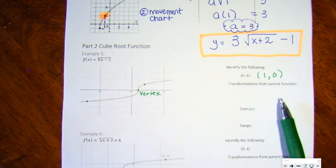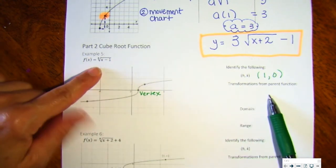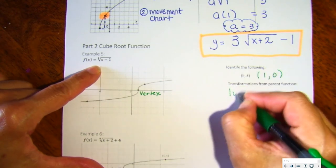And if we describe the transformations from the parent function, the only thing that has occurred is one unit to the right.